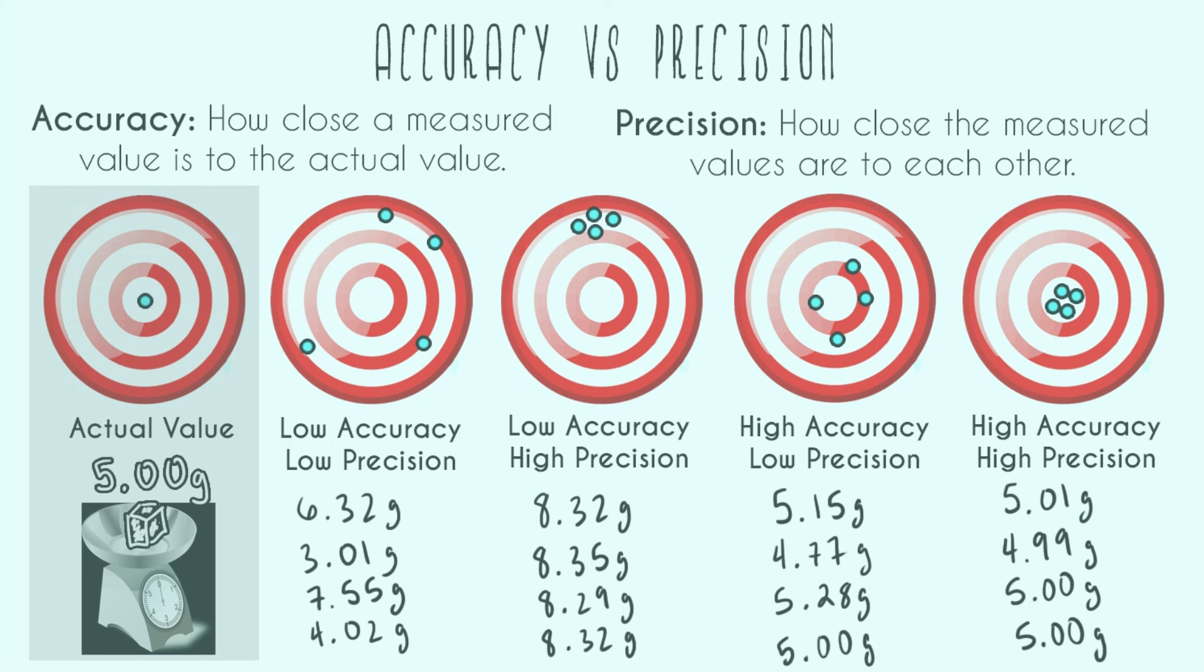So this is great, right? This is what you want to do if you measure something four times. You get the same thing almost every time, and it should be the actual mass of what you're measuring. And so this is both highly accurate and highly precise.